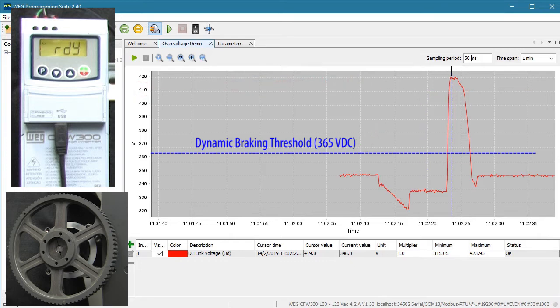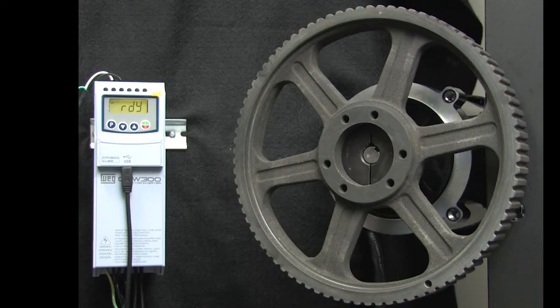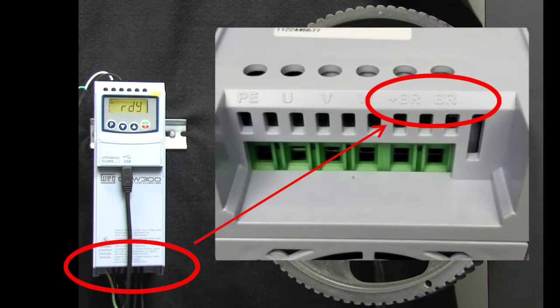So during deceleration, we expect to see the DC bus rise until it hits 365 volts. At that point, the drive should switch the braking resistor in and the DC bus will stop rising. Well, all that's left now is to connect a resistor.